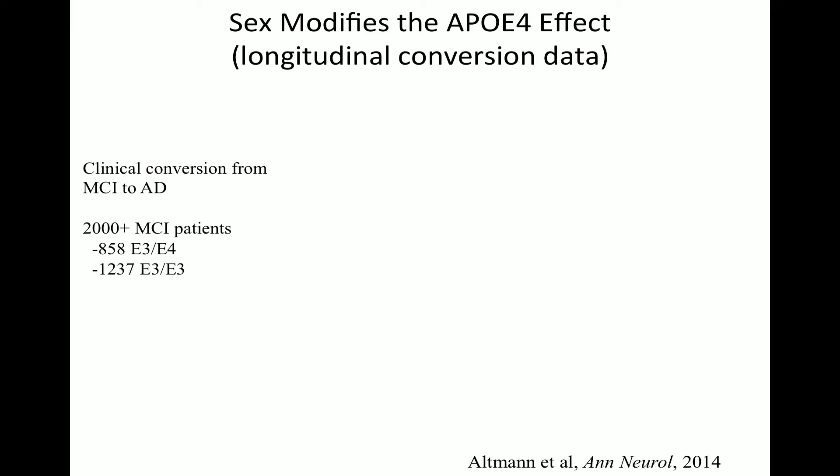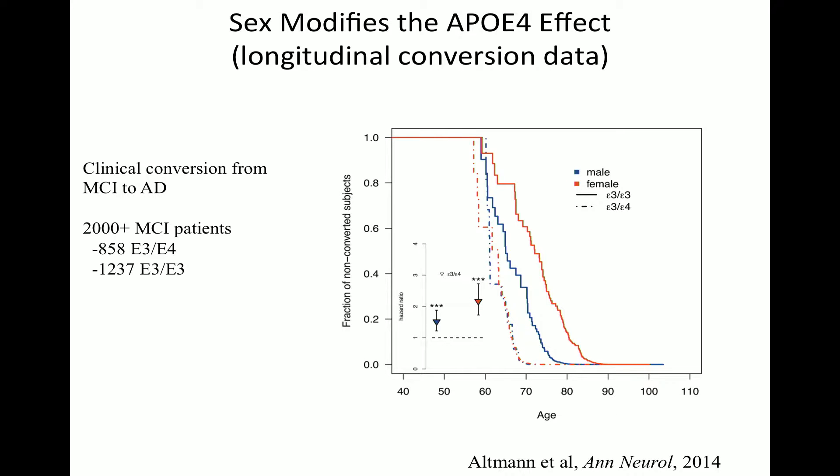The next question: what about people who already have mild cognitive impairment? Using 2,000 people starting with MCI, looking at conversion to Alzheimer's disease longitudinally, again the gap between the two red lines is bigger than the gap between the two blue lines — meaning the E4 effect is more prominent in women. The hazard ratio in women with MCI who are E4 carriers is about two-fold risk of conversion, while in men it's about 1.5-fold. So it's significant in men too, but less so. Both for healthy aging to MCI and from MCI to Alzheimer's, the E4 effect was larger in women.